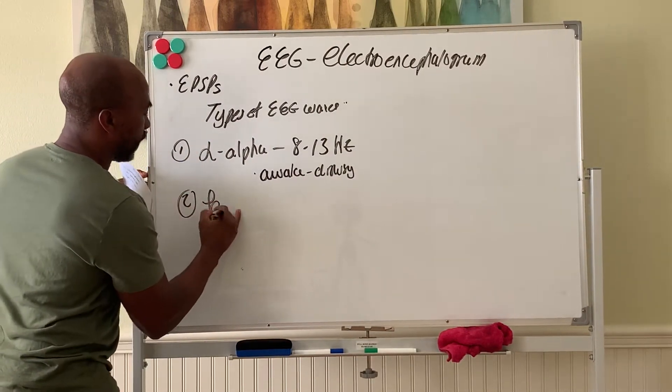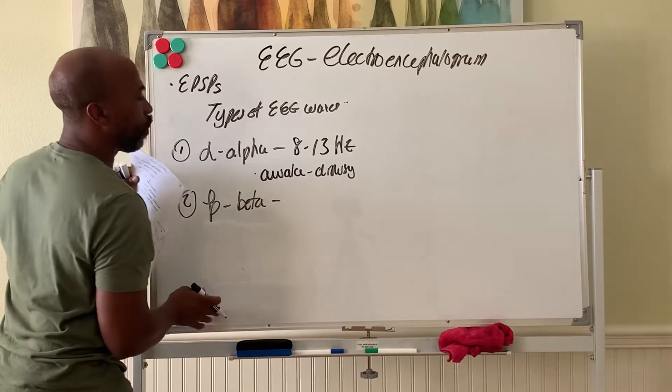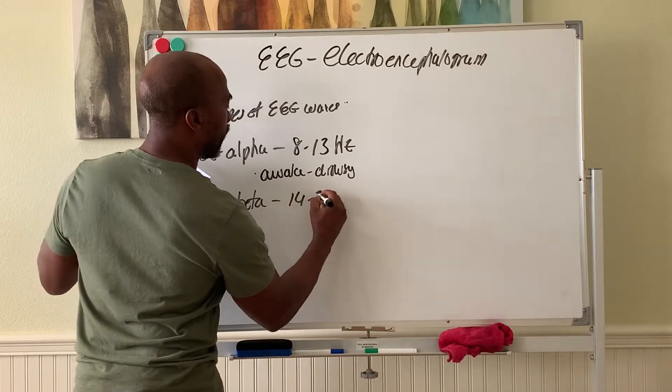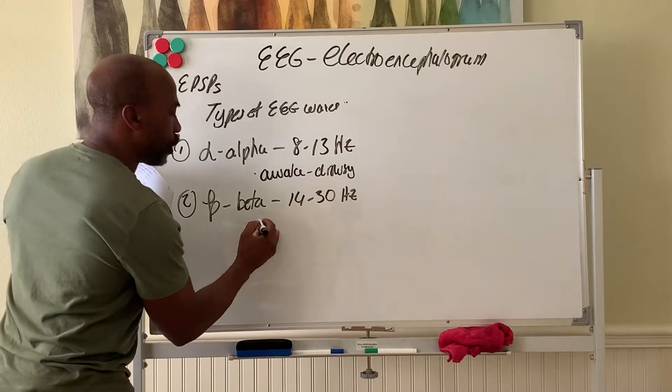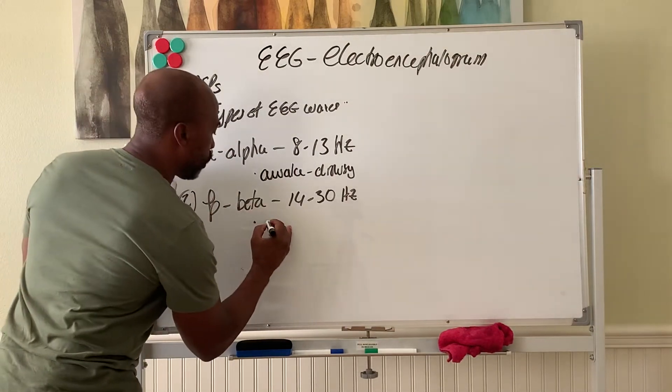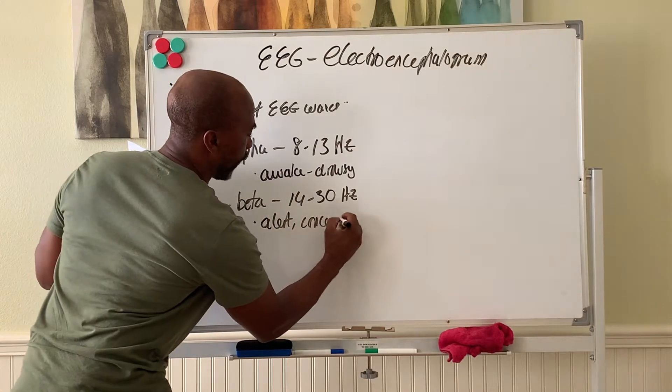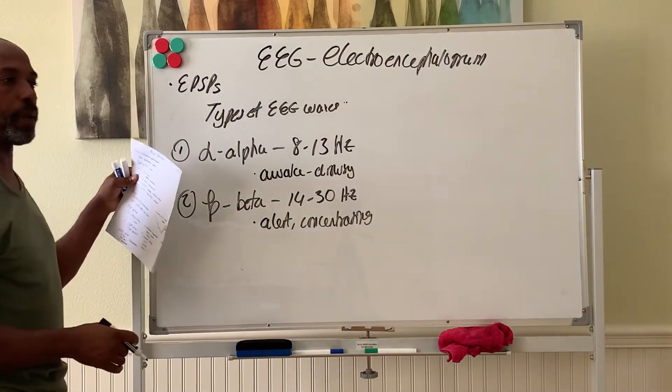Your beta waves are a little faster, around 14 to 30 hertz. These are normally present when you are alert and even concentrating, like taking an exam. You should have beta waves showing up in your EEG.